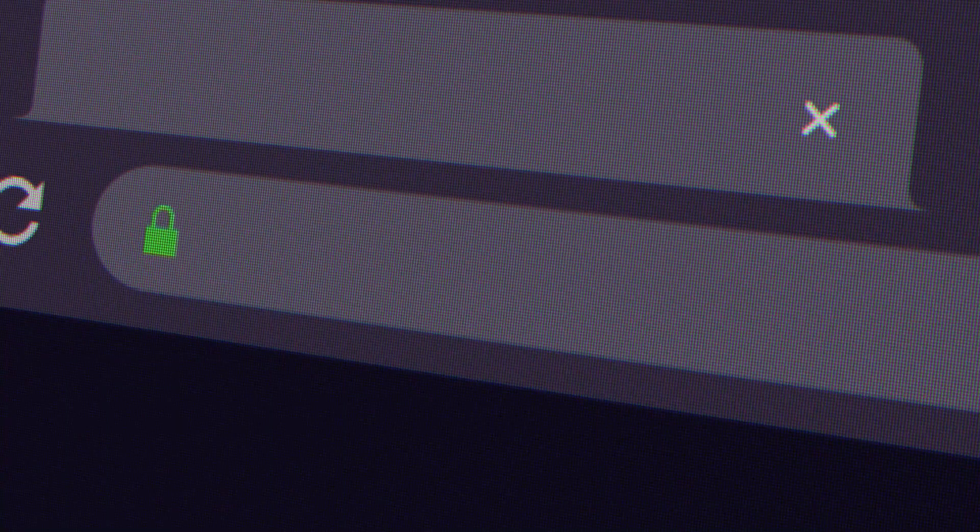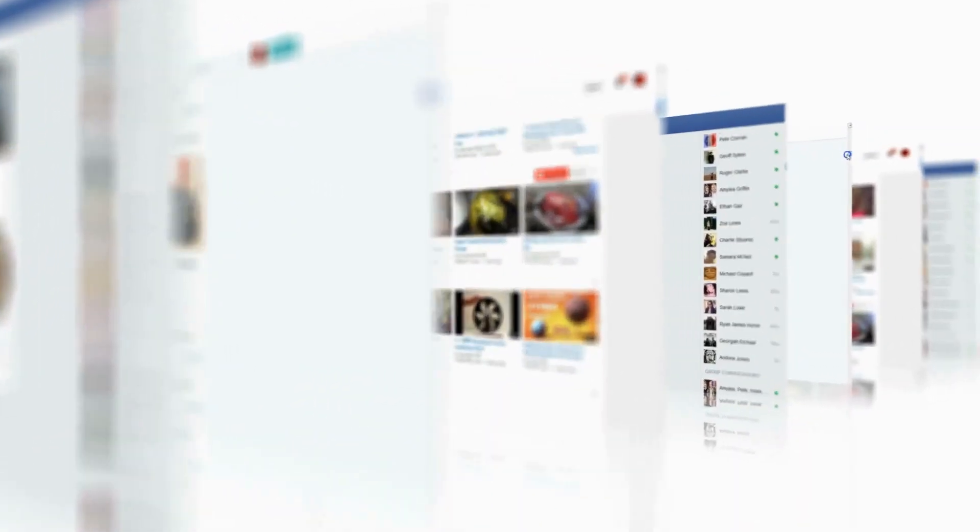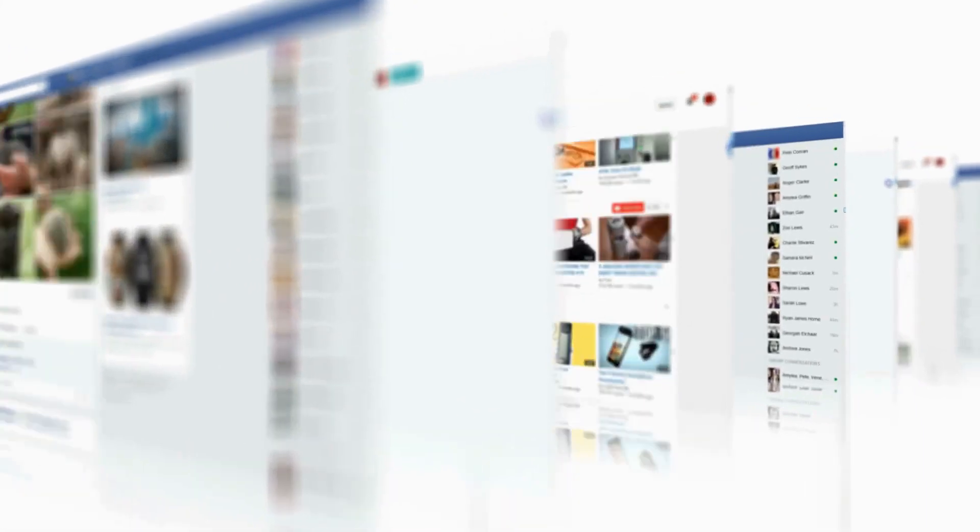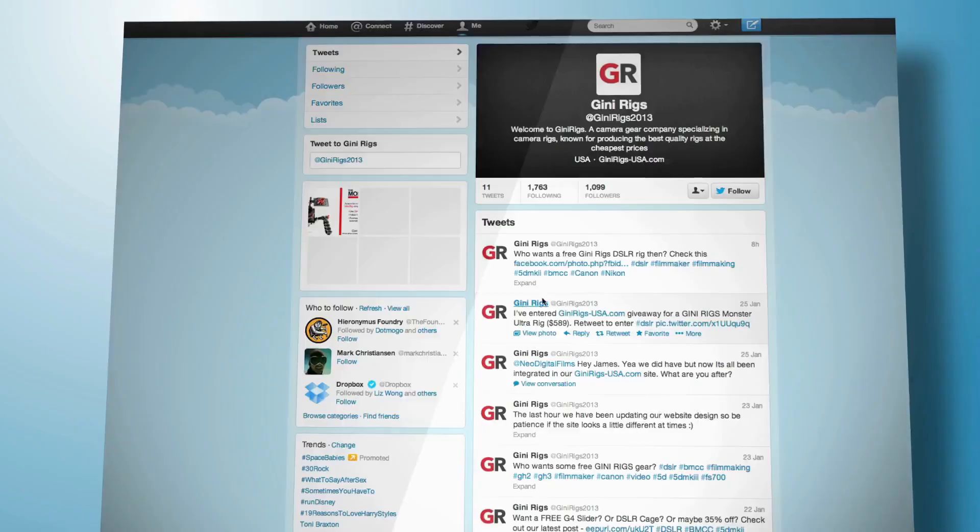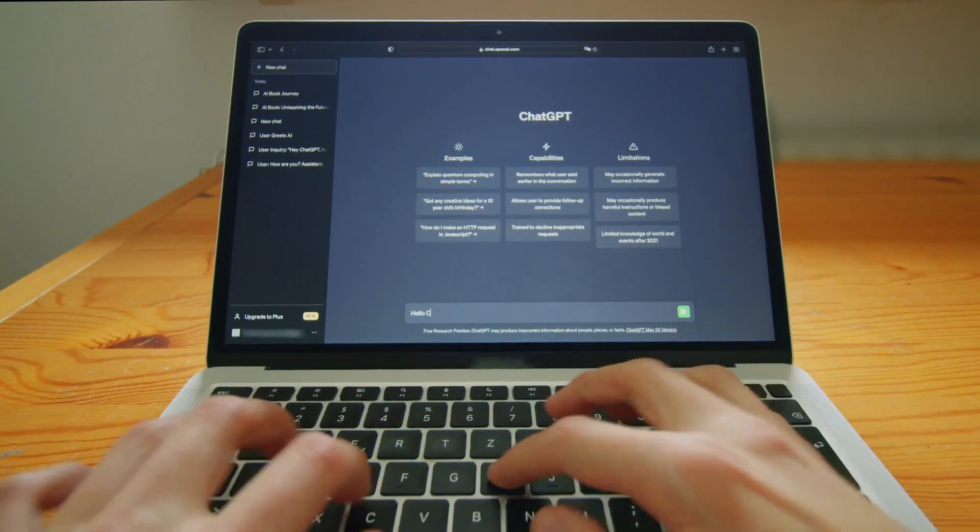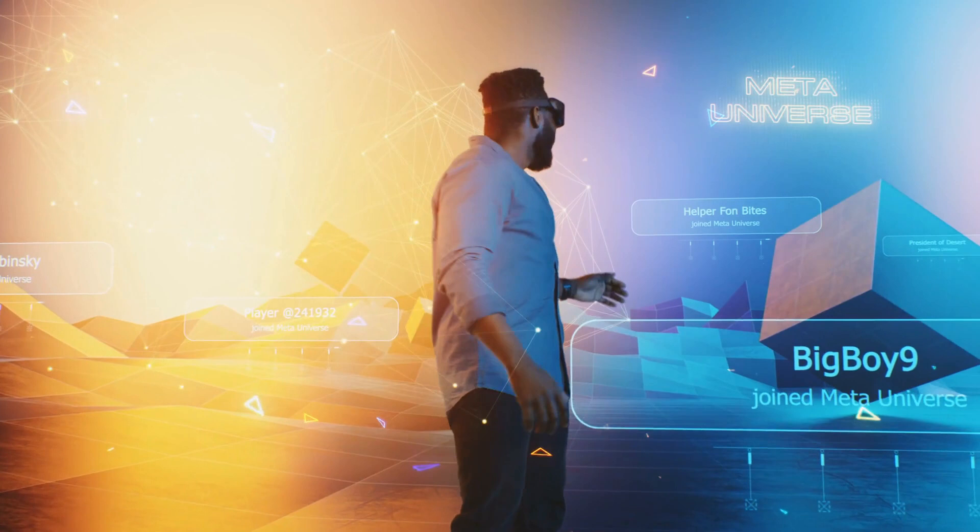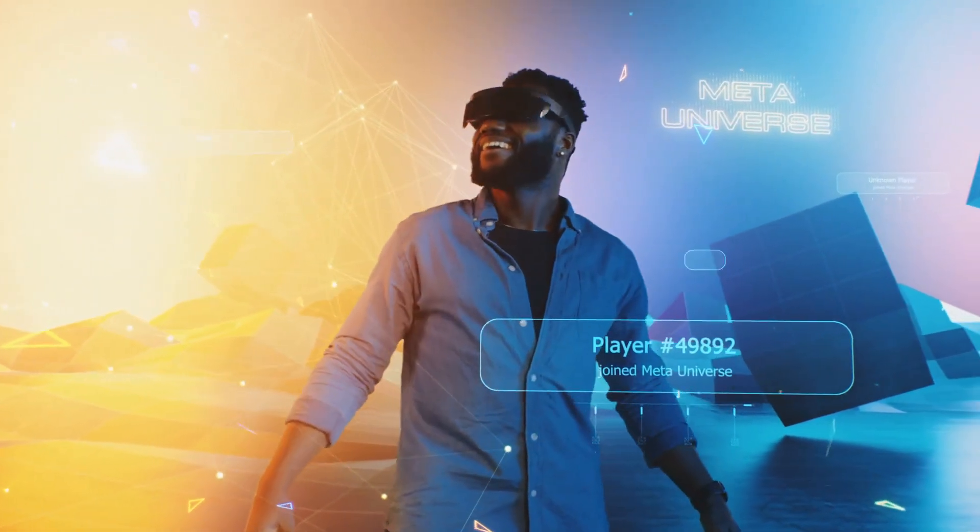From the early controversies surrounding ChatGPT's alleged bias to the viral outcries on social media, we'll dive deep into the pivotal moments that led Elon Musk to tweet those fateful words: What we need is Truth GPT.